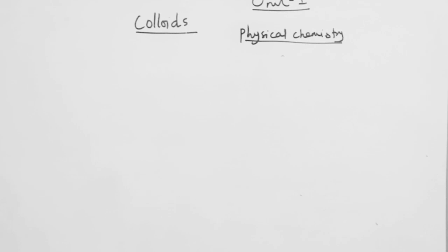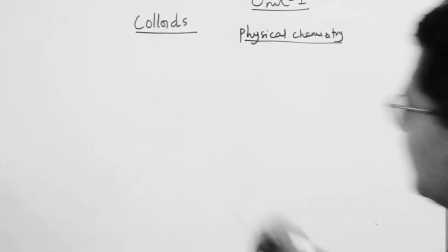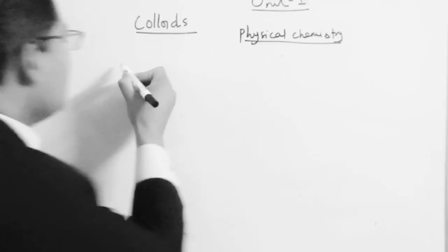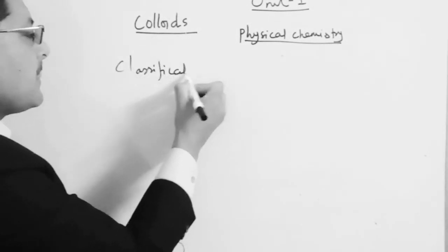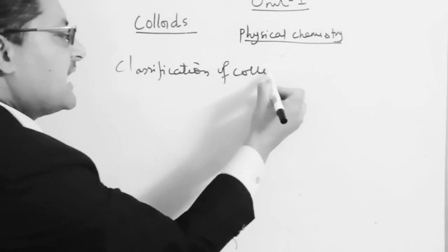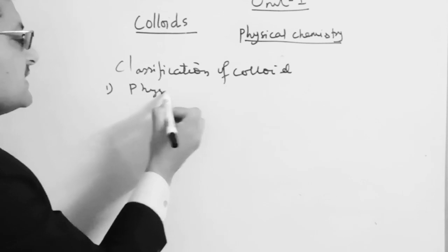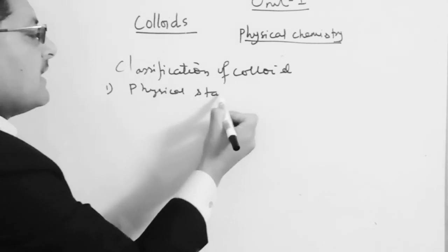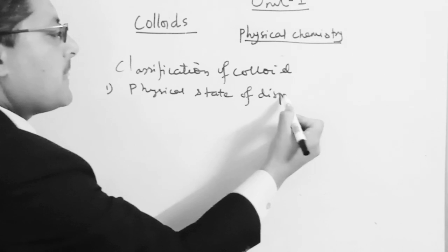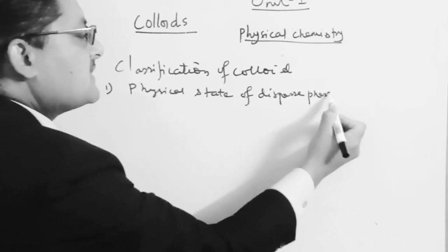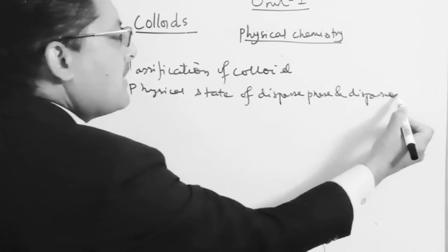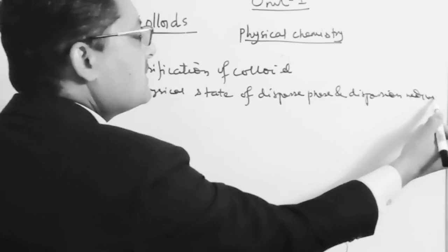First of all, I am taking the physical state of the dispersed phase. I have to classify it based on physical state. The classification of colloid is based on the physical state of the dispersed phase and the dispersion medium.